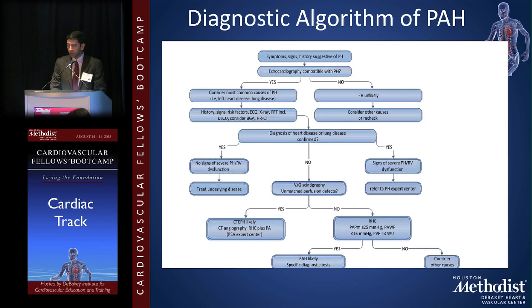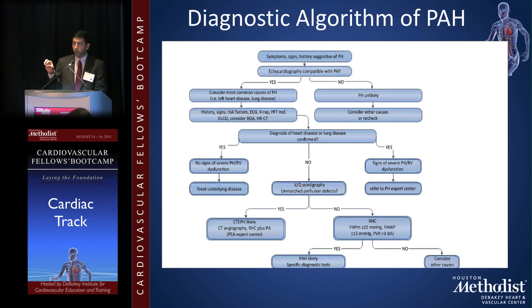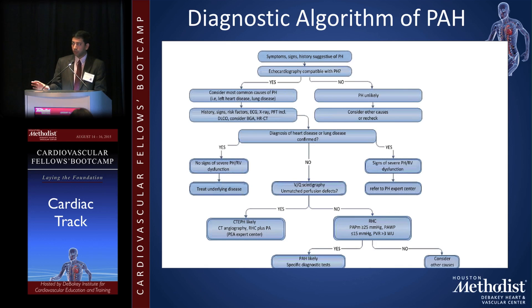With pulmonary arterial hypertension, the defining feature is that the wedge pressure is less than 15, which differentiates it from pulmonary hypertension due to left heart disease, where the wedge pressure will be greater than 15.